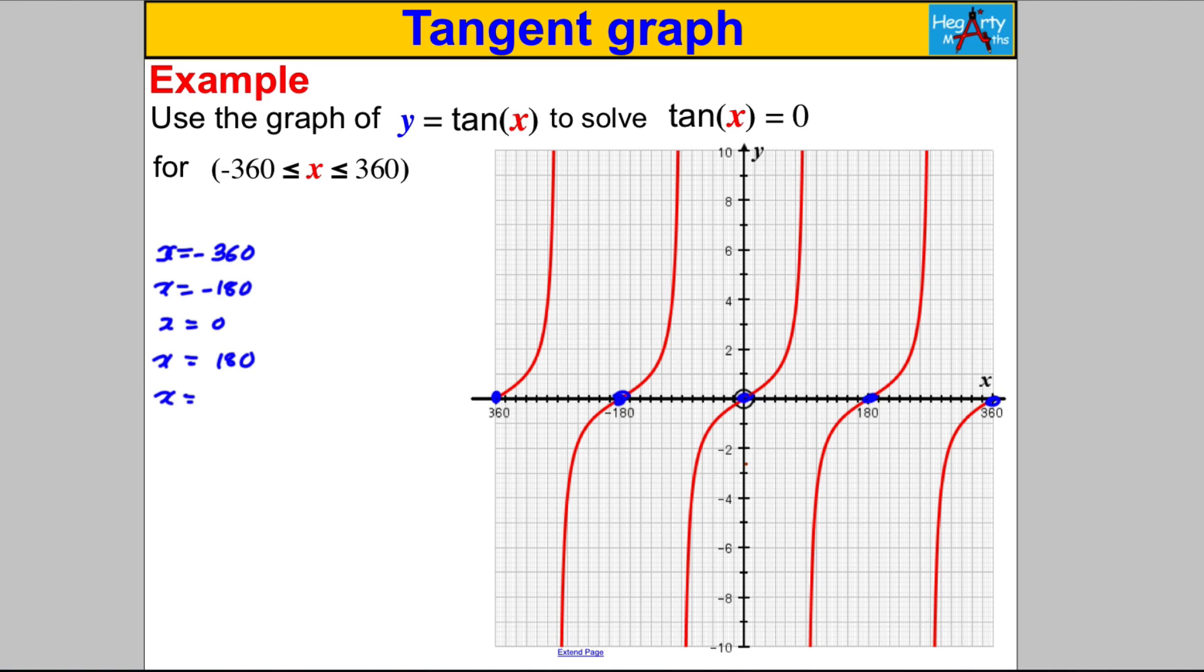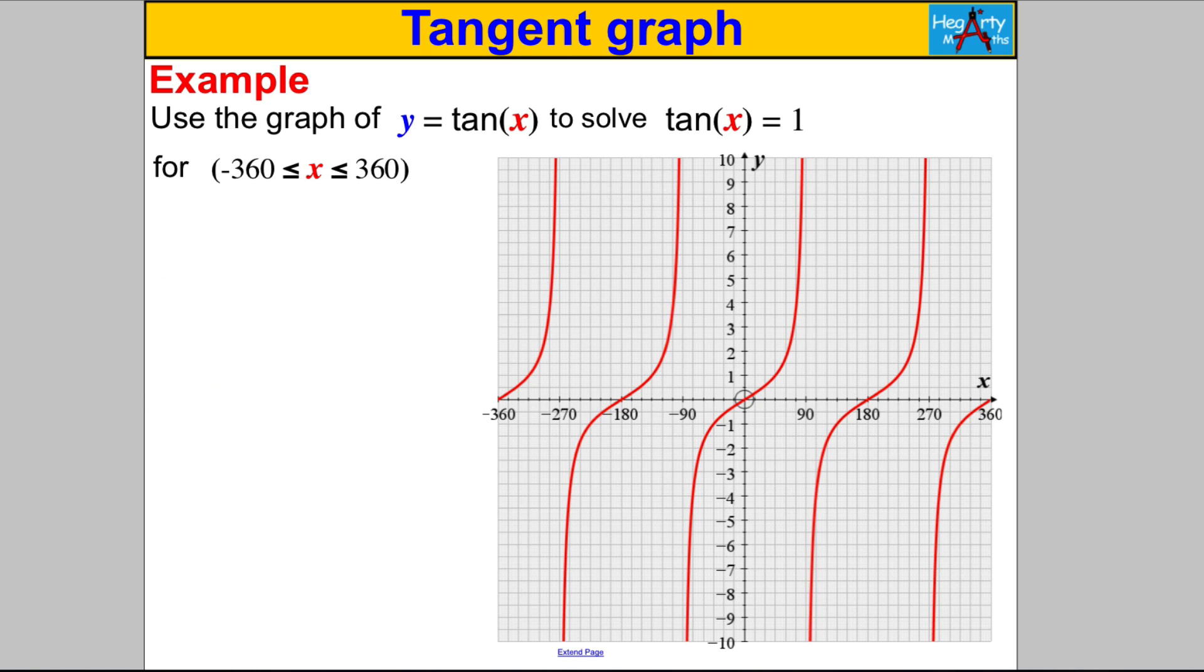Let's have a go at two more. Use the graph y equals tan(x) to solve tan(x) equals 1. Pause the video and have a go. Let's draw the line y equals 1 and that looks like that. We look like we have solutions here, here, here, and here. Now there are 1, 2, 3, 4, 5, 6 squares worth 90, each is worth 15. 90 divided by 6: 1, 2, 3, that must be 45 degrees there.